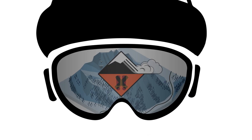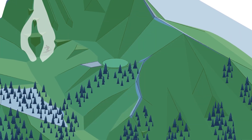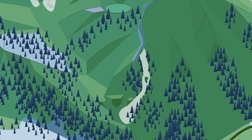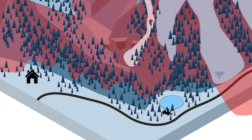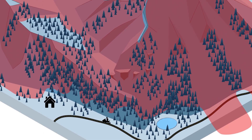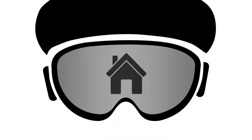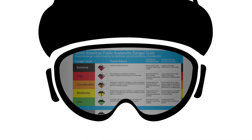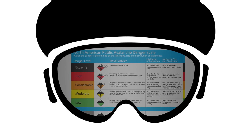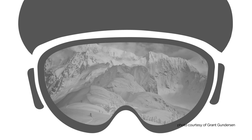Remember that you control your own risk. For example, you can assume high levels of risk on a low-danger day by choosing to enter consequential terrain. Conversely, you can minimize your risk on a high-danger day by simply avoiding avalanche terrain altogether. The avalanche danger scale is a starting point in your daily planning process, but in the end, you are in charge and you make the choice.